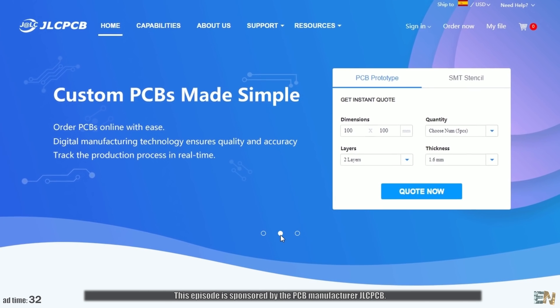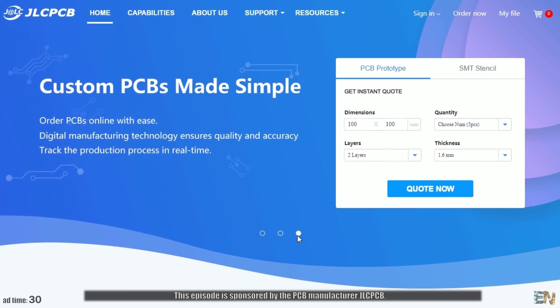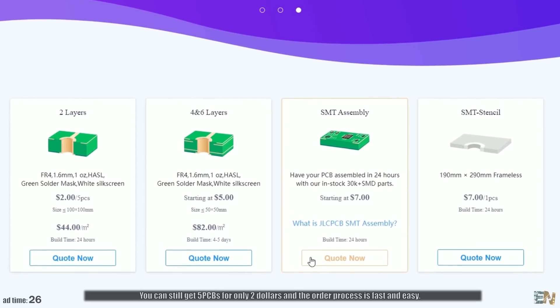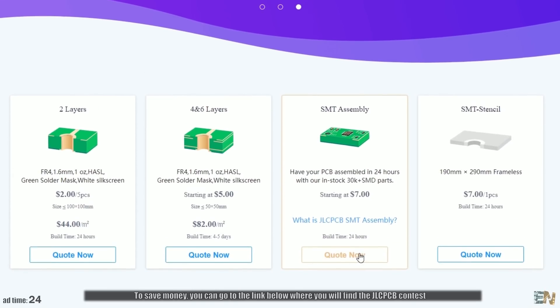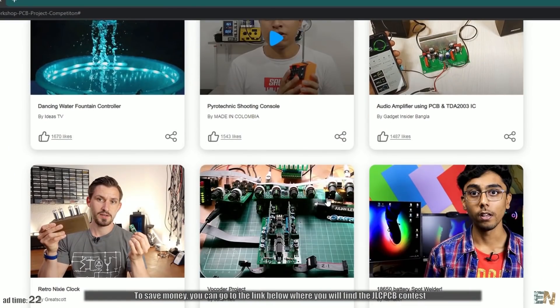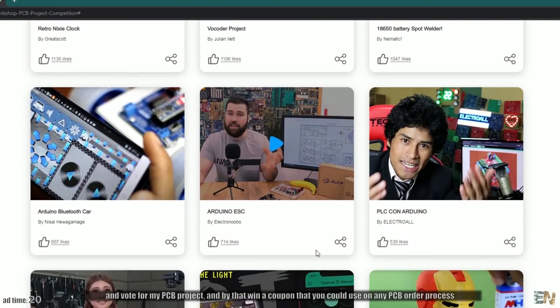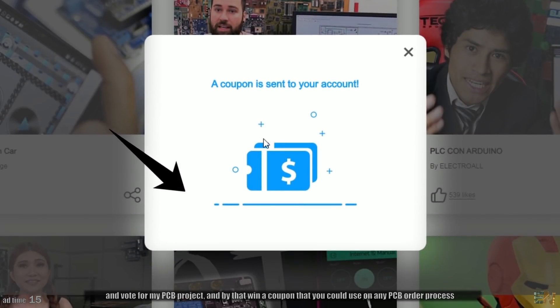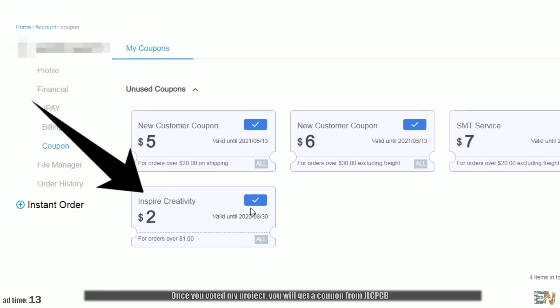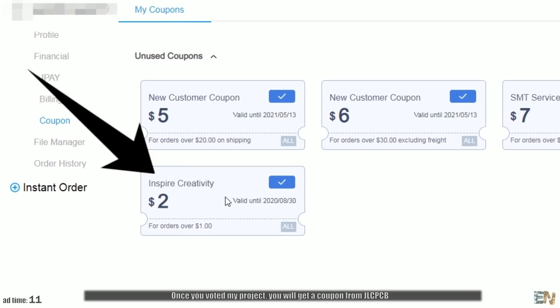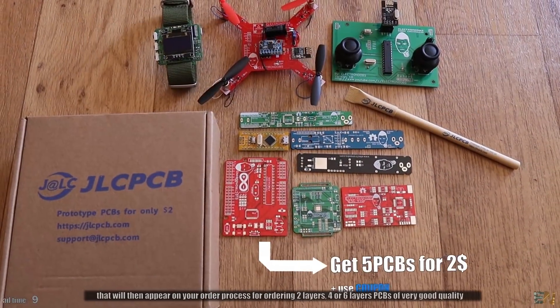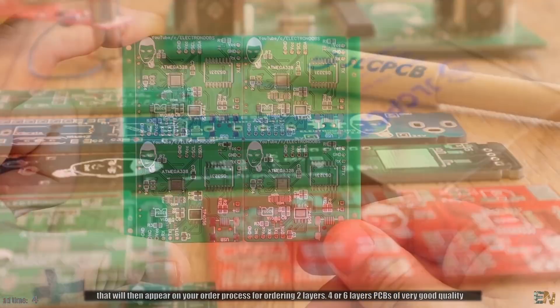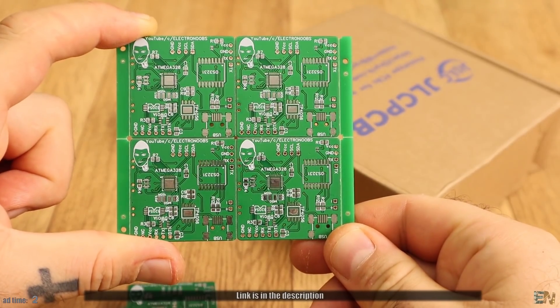This episode is sponsored by the PCB manufacturer, JLCPCB. You can still get 5 PCBs for only $2 and the order process is fast and easy. To save money you could go to the link below where you will find a JLCPCB contest and you can vote for my PCB project and by that you will win a coupon that you could use on any PCB order process. Once you voted for my project, you will get that coupon from JLCPCB and that will appear on your order process for ordering 2 layers, 4 or even 6 layers PCBs of very good quality. The link is in the description.